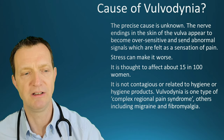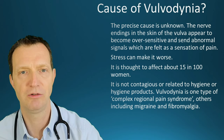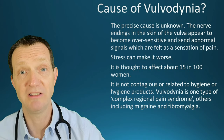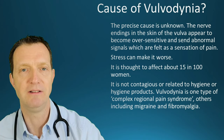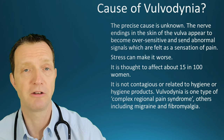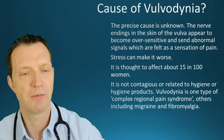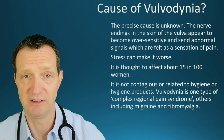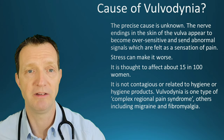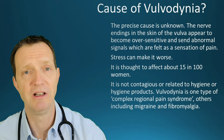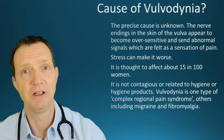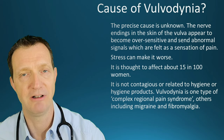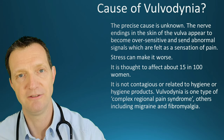Vulvodynia is classed as a complex regional pain syndrome. That's essentially the same category as migraine or fibromyalgia — a pain syndrome that is not fully understood. We'll be honest: migraine and fibromyalgia aren't fully understood either. It is simply a complex regional pain syndrome affecting the vulva.